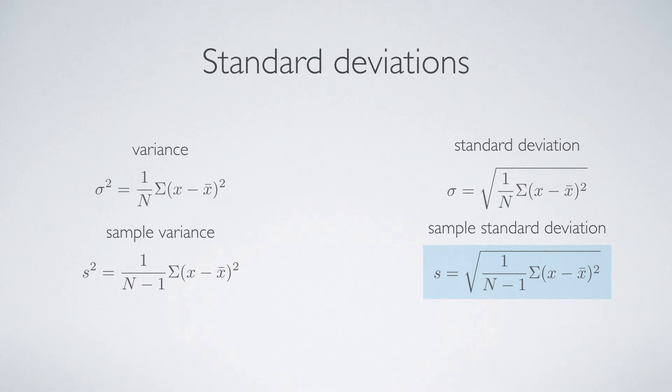So I have the standard deviation with a sigma, and the sample standard deviation with an s. And this is the square root of the sum of these differences between the values and the mean over n, or n minus one, respectively.